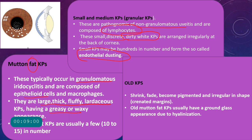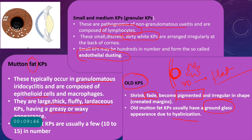When small and medium KPs become old, they shrink in size. Some fade out while others become pigmented. Old KPs lose their 3D structure, become flat and irregular in shape with crenated margins — called crenated KPs. Old mutton fat KPs develop a ground glass appearance due to hyalinization, losing their large thick greasy yellowish look and appearing more hyalinized.